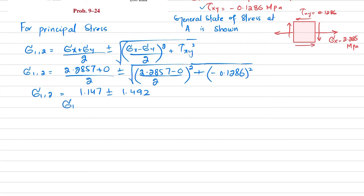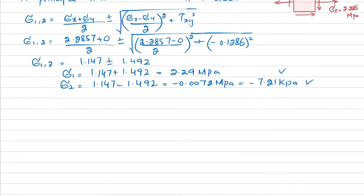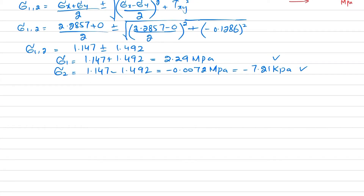Therefore, sigma 1 = 1.147 + 1.1492 = 2.29 megapascal, and sigma 2 = 1.147 minus 1.1492 = minus 0.0072 megapascal, which converts to minus 7.21 kilopascal. These are the principal stresses sigma 1 and sigma 2.